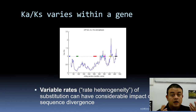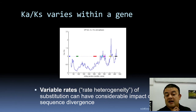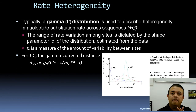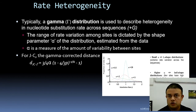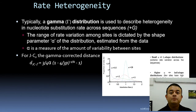Rate heterogeneity is usually modeled using the gamma distribution mathematically. Like the Gaussian or Poisson distributions, the gamma distribution is a probabilistic distribution used to describe heterogeneity of nucleotide substitution rates across sequences. To indicate gamma distribution correction is used, you simply add +G — for example, K2P+G — making it a modular equation.